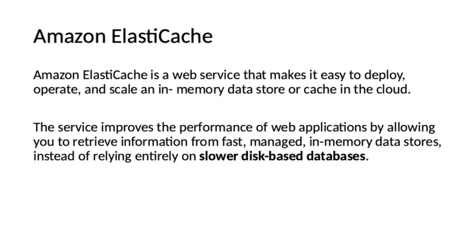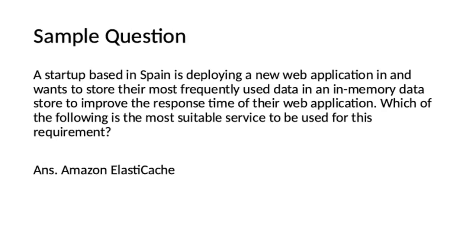Amazon ElastiCache is another topic from which you can expect at least one question. Amazon ElastiCache is a web service that makes it easy to deploy, operate, and scale an in-memory data store or cache in the cloud. The service improves the performance of a web application by allowing you to retrieve information from fast, managed in-memory data stores instead of relying entirely on slower disk-based databases. Sample question: A startup is deploying a web application and wants to store their most frequently used data in an in-memory data store to improve response time. The keyword is 'in-memory data store to improve response time' — the best option is Amazon ElastiCache.